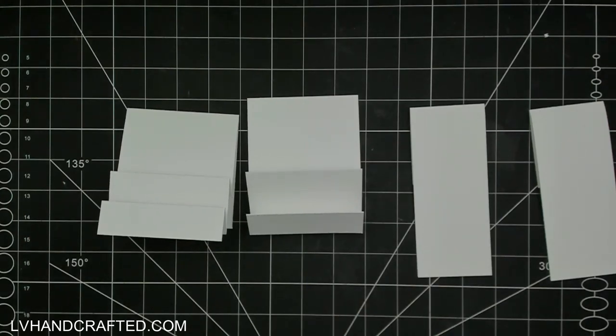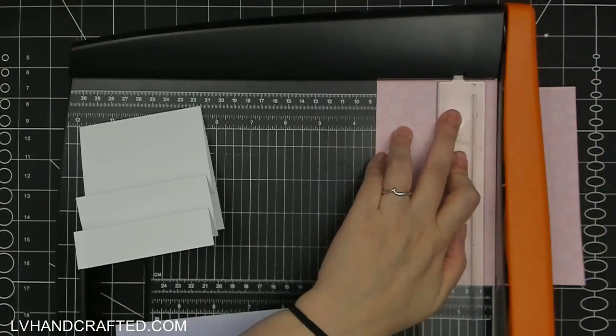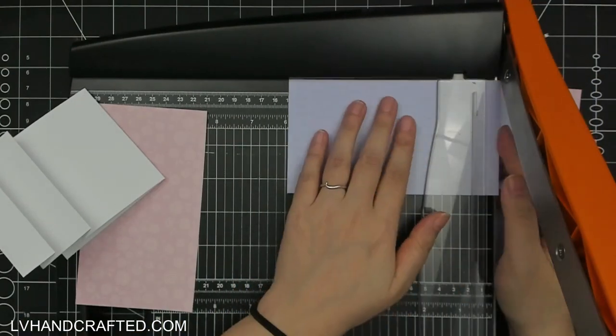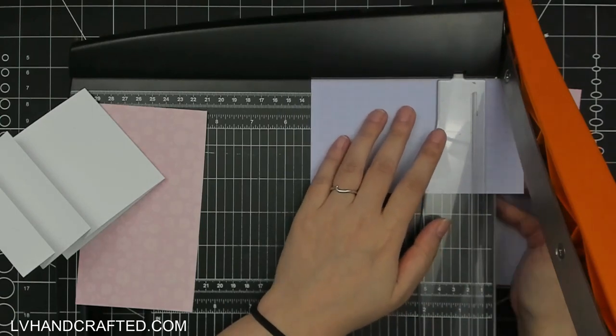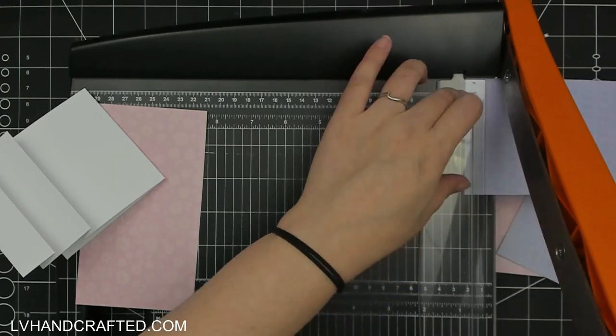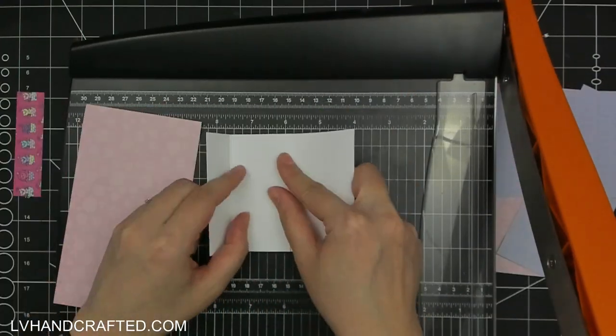And be sure that you're using a bone folder or something to burnish those score lines really well because your stepper card will have a tendency to want to do that giraffe leg effect of just continuing to kind of spread out and then try to lay flat. But having nice crisp score lines will help it to stay upright.